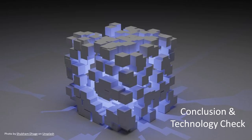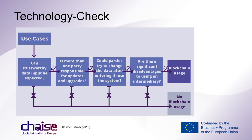In conclusion, various blockchain use cases have been presented to give a general idea of how the technology extends far beyond the financial sector. To avoid applying blockchain unnecessarily, the German Association for Information Science (BITKOM) has developed a simple guideline to check whether blockchain makes sense for an application concept. To justify blockchain use, the following questions should be answered yes: Can a trustworthy data input be expected? Is more than one party responsible for updates and upgrades? Could parties attempt to modify data after it has been entered? Are there significant disadvantages to using an intermediary? If any answer is no, then blockchain technology is not appropriate and another technology should be used.